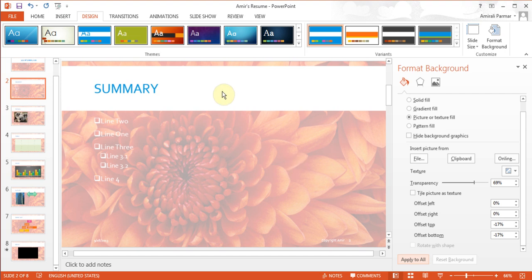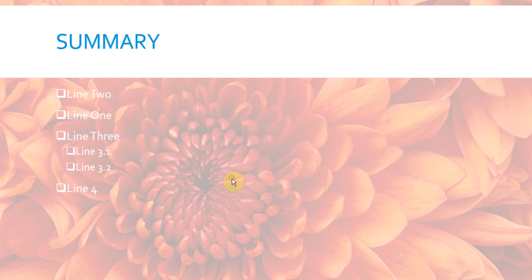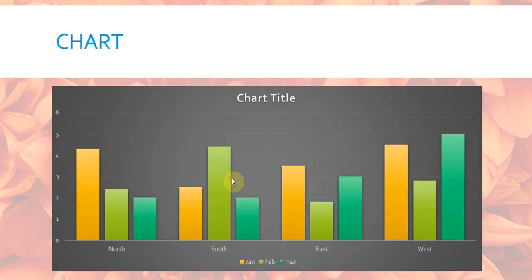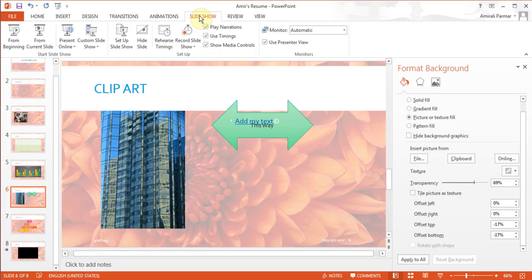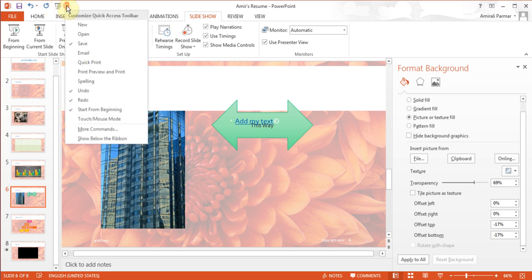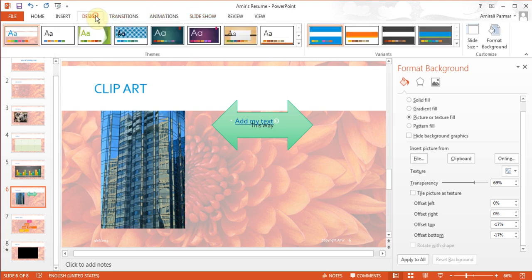Now to see this in action, go to Slideshow from Beginning. As I click through, you can see all the slides have that background. Hit Escape to stop. Instead of going to Slideshow from Beginning each time, there's a shortcut button — Start from Beginning — on the toolbar. You can go back to Design and click something else to change it. That's a great way to use Format Background.